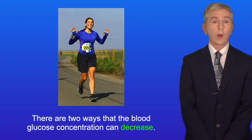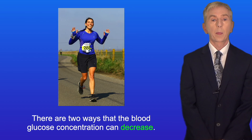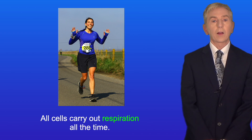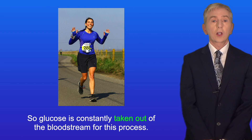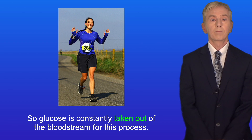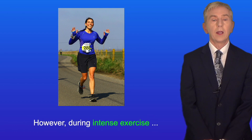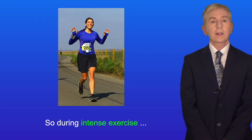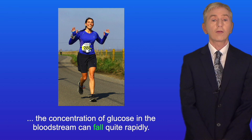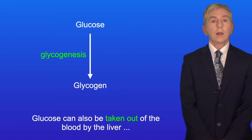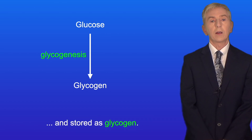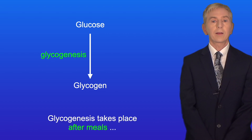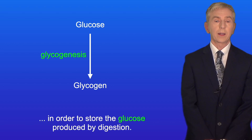There are two ways that the blood glucose concentration can decrease. Firstly, glucose is used as a source of energy via respiration. All cells carry out respiration all the time, so glucose is constantly taken out of the bloodstream for this process. However, during intense exercise, the demand for energy massively increases due to muscle contraction, so the concentration of glucose in the bloodstream can fall quite rapidly. Glucose can also be taken out of the blood by the liver and stored as glycogen — this is called glycogenesis, and it takes place after meals in order to store the glucose produced by digestion.